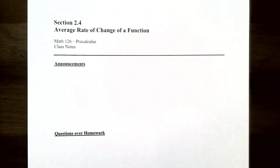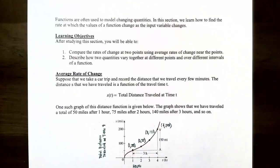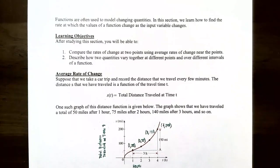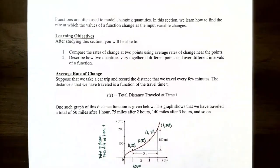Hi everyone, it's Professor Permanent and in this video we're going to talk about average rate of change of a function. As we've seen in previous videos, functions are often used to model changing quantities between two different variables. In this section we're going to learn how to find the rate at which the values of a function change as the input variable changes, comparing rates of change at two points using average rates of change near the points, and describing how two quantities vary together at different points and over different intervals.